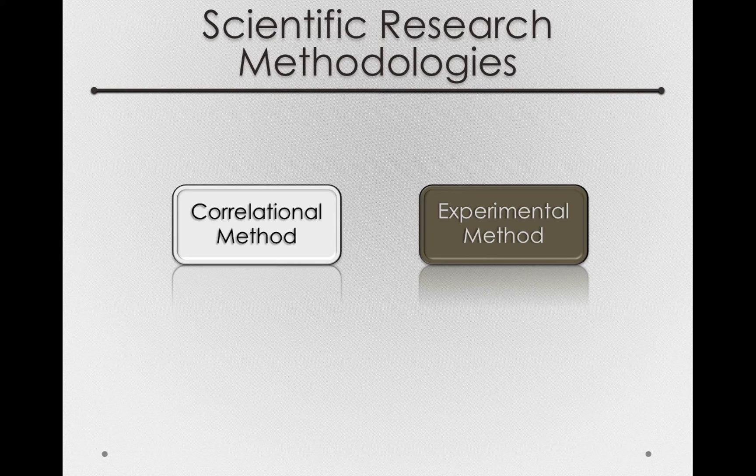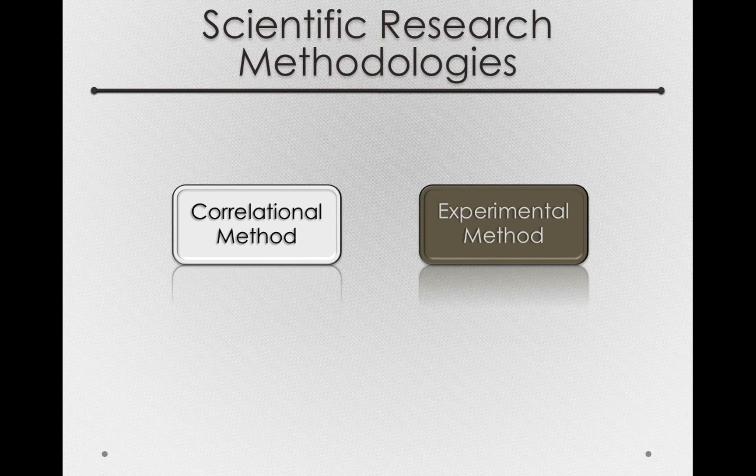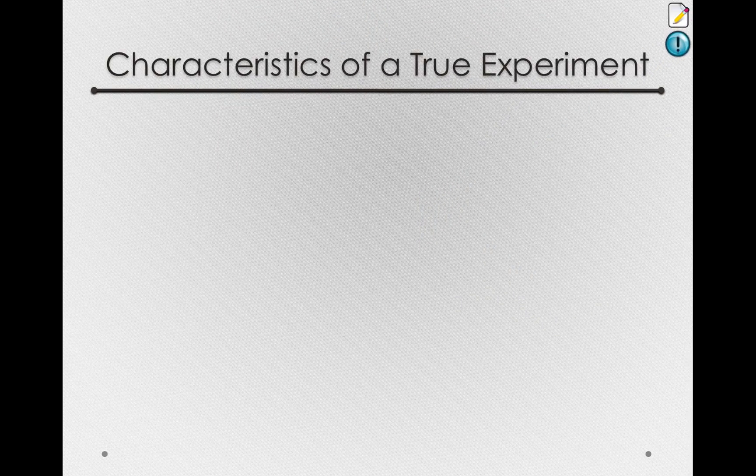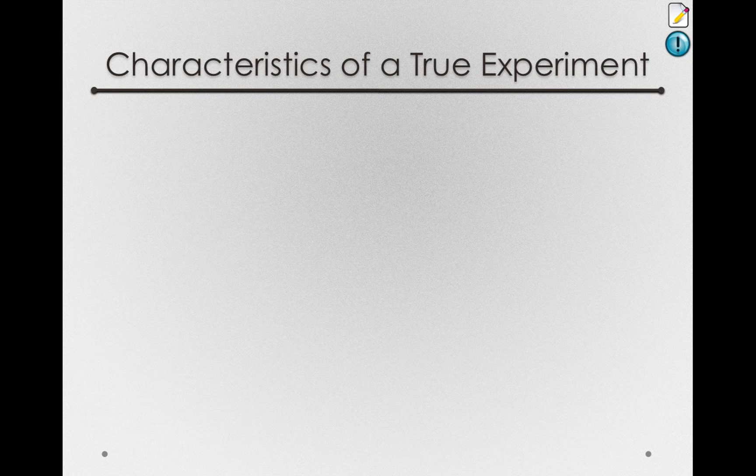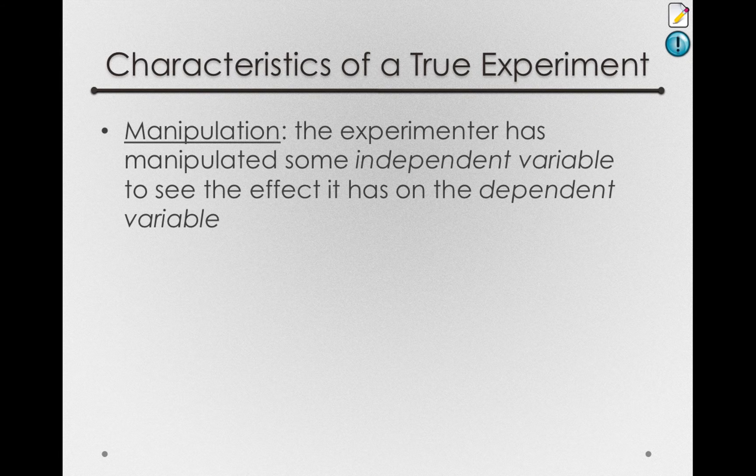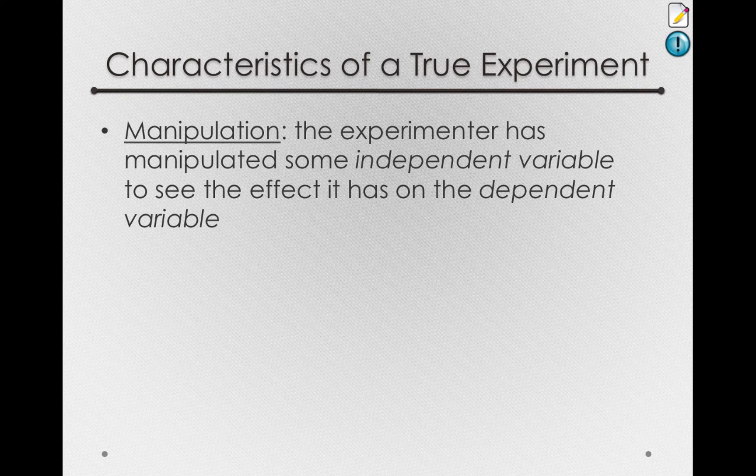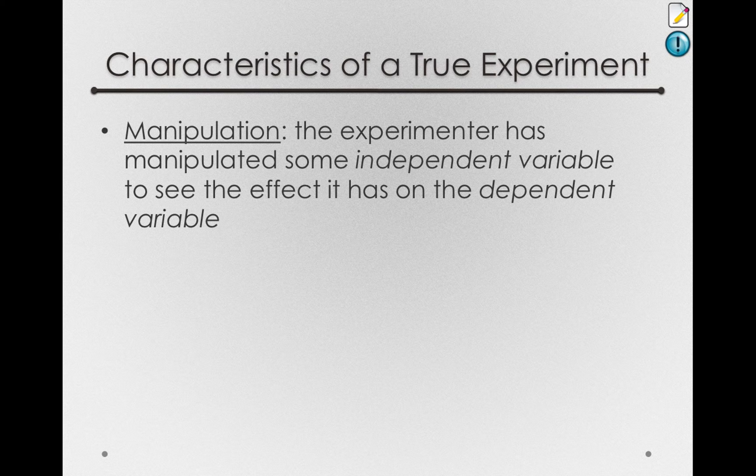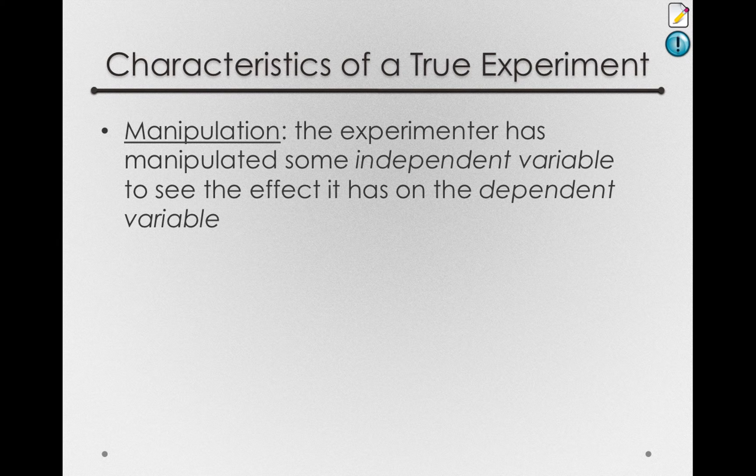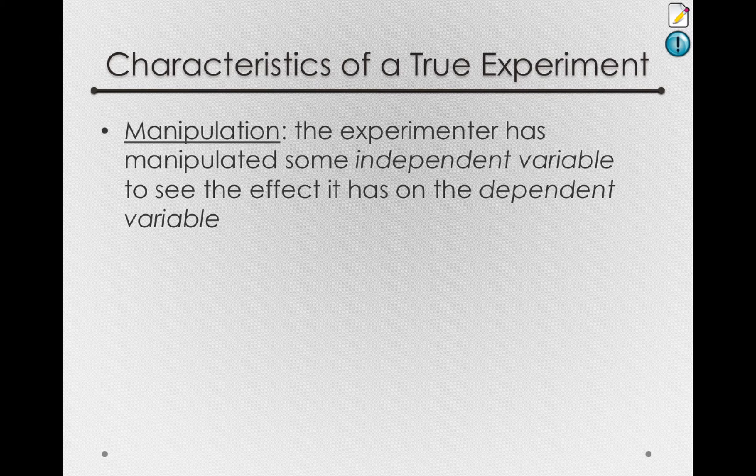Experiments come in lots of different varieties, and in this class we'll see many of them. But there are two very central characteristics of any true experiment. The first characteristic is manipulation, that the experimenter has manipulated some independent variable to see the effect it has on the dependent variable.